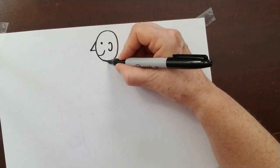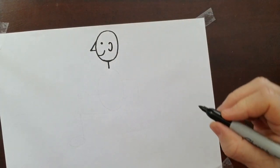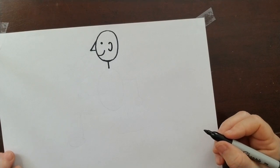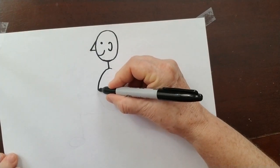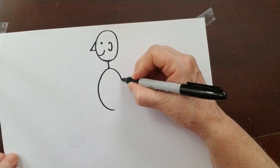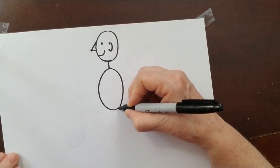Next step is a vertical line for the neck. An oval for the body. And an oval is a skinny circle.